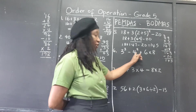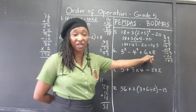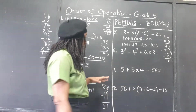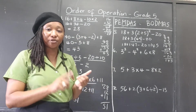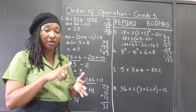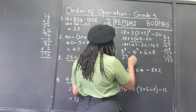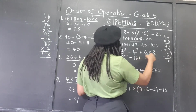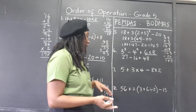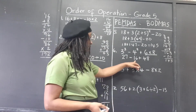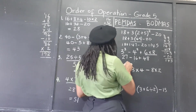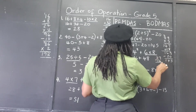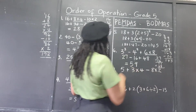The next problem has powers and a multiplication we need to sort out before addition and subtraction. Working the indices: 3 to the third means 3 times 3 times 3 — 3 times 3 is 9, times 3 is 27. 4 squared means 4 times 4, which is 16. And the multiplication: 6 times 8 is 48. Now we subtract: 27 take away 16 is 11, and 11 plus 48 is 59. That's our answer.